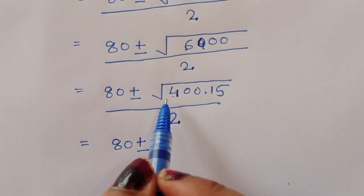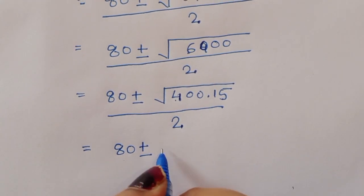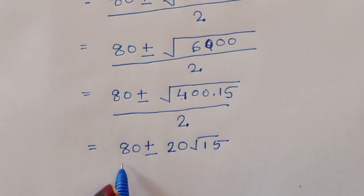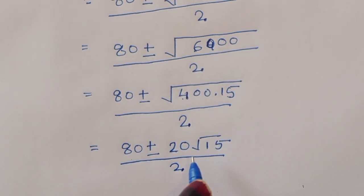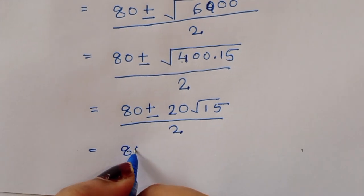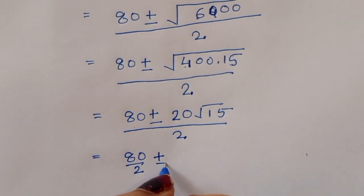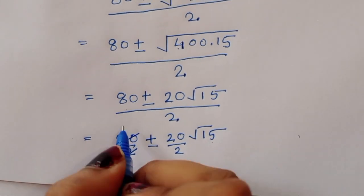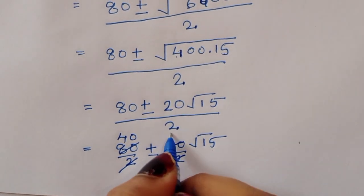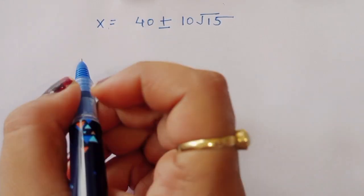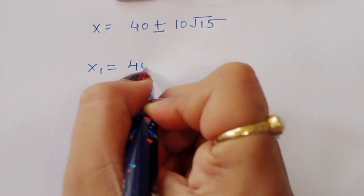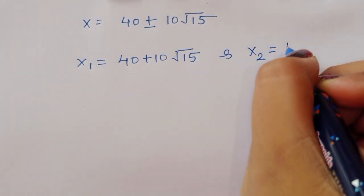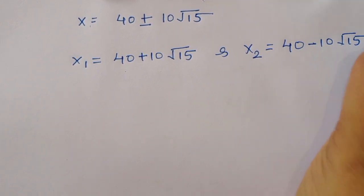Simplifying √6000: √6000 = √(400·15) = 20√15. So x = (80 ± 20√15) / 2 = 40 ± 10√15. Therefore x₁ = 40 + 10√15 and x₂ = 40 − 10√15.